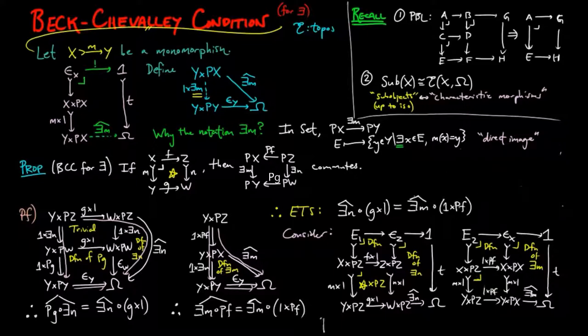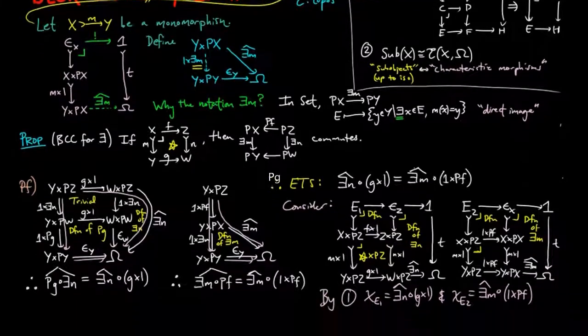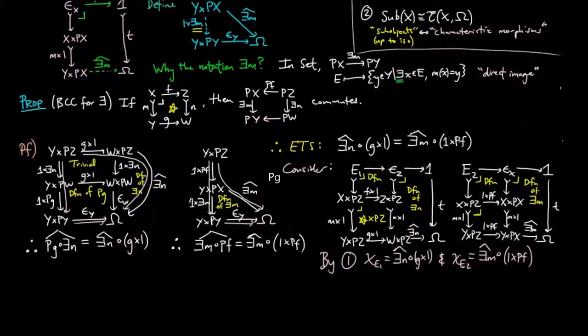Similarly, the next diagram has the right rectangle a pullback by definition of ∃m, the top left square by definition, and the bottom left is easily seen to be a pullback since this is true for any composition of products of morphisms as the double-star green diagram shows. Therefore, by the pullback lemma, each outside square is a pullback, and thus e1 and e2 are the subobjects of Y cross PZ classified by ∃n-hat ∘ (g cross 1) and ∃m-hat ∘ (1 cross Pf) respectively.